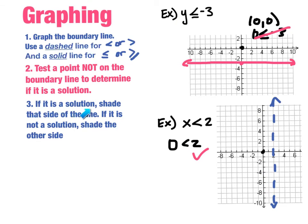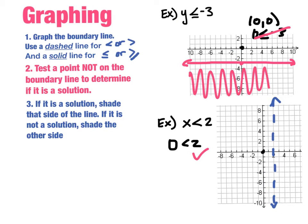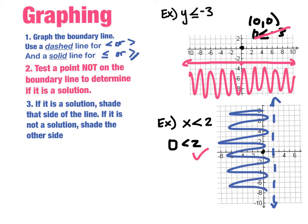Step 3: if the test point is a solution, shade that side of the line; if it is not, shade the other side. In the first example, (0,0) was not a solution, so I shade the other side of the line — that's where all solutions lie. In the second example, X is less than 2, and (0,0) is a solution, so I shade that side, where all values are less than 2.